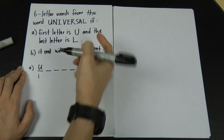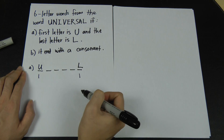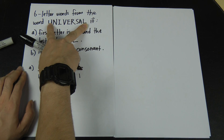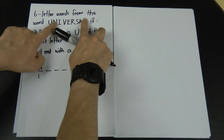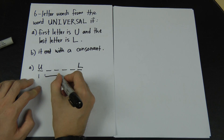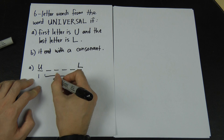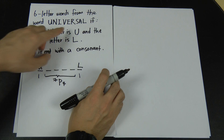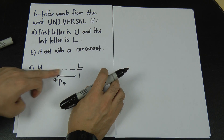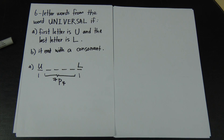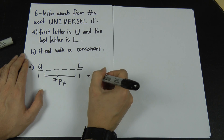There is only one U and one L in UNIVERSAL, so there is 1 way to place U first and 1 way to place L last. After removing U and L, we have 7 letters remaining and 4 empty positions in the middle. So the number of arrangements is 7P4. Using a calculator, 7P4 = 840 ways.